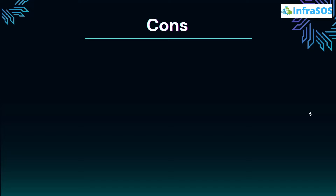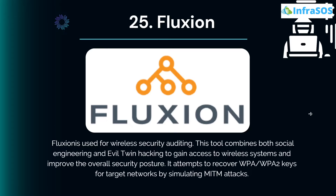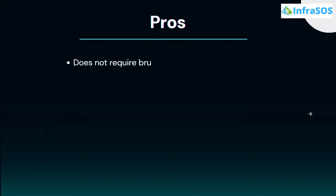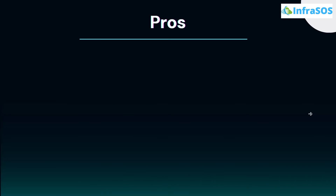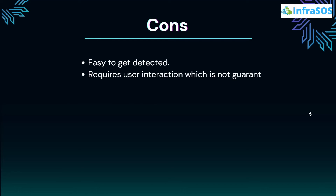Last on our list at number 25 we have Fluxion. Fluxion is used for wireless security auditing. This tool combines both social engineering and evil twin hacking to gain access to wireless systems and improve the overall security posture. It attempts to recover WPA or WPA2 keys for target networks by simulating man-in-the-middle attacks. Pros include no requirement for brute force, no need for extensive penetration testing knowledge, ease of use, and requiring less RAM compared to other solutions. Cons include being easy to detect and requiring user interaction which is not guaranteed.